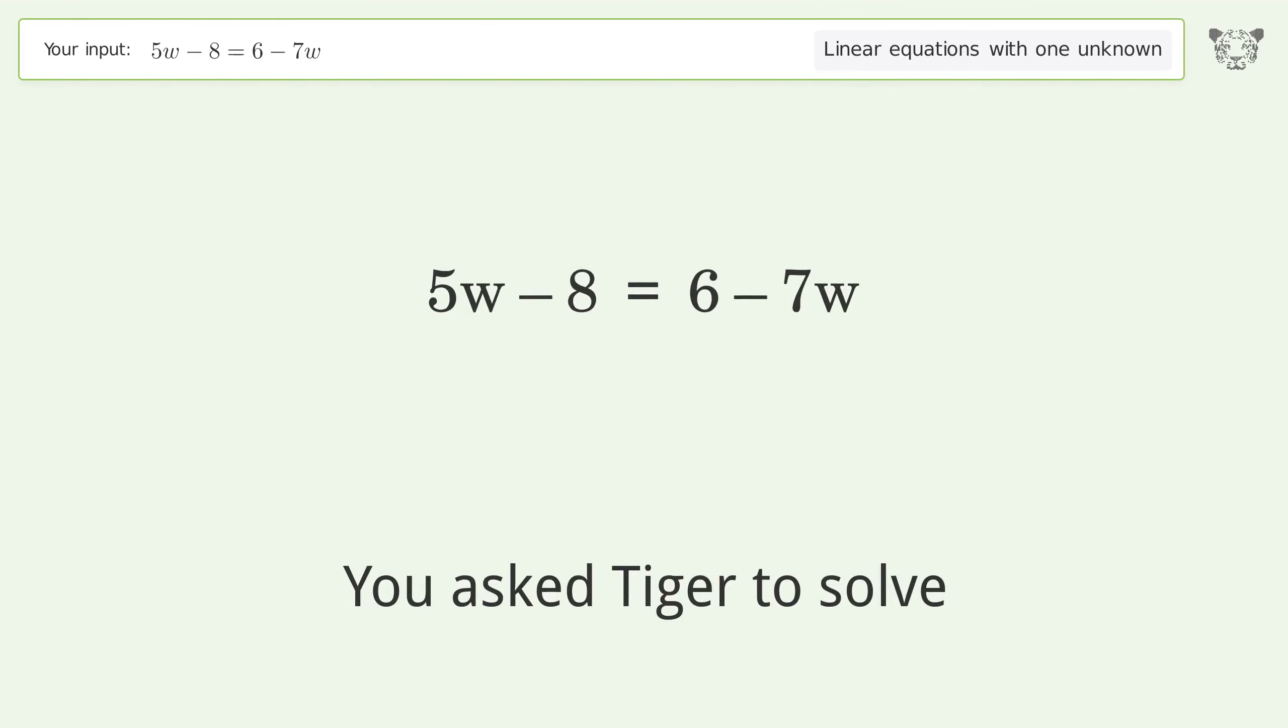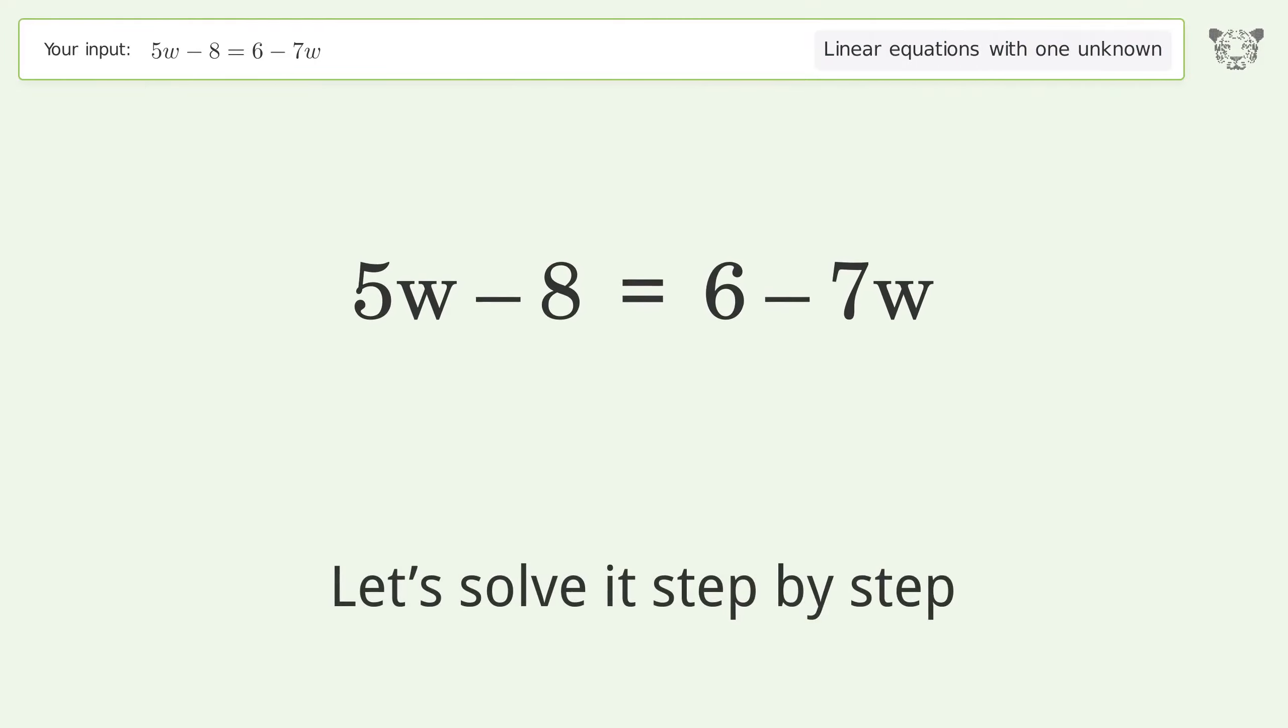You asked Tiger to solve. This deals with linear equations with one unknown. The final result is w equals 7 over 6. Let's solve it step by step.